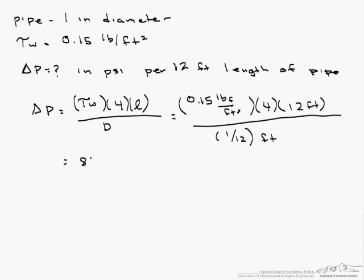And that equals 86.4 pounds per foot squared. But we want it in psi, which is pounds per square inch, so we have to divide this by 144 square inches per foot squared, and that equals 0.6 psi.